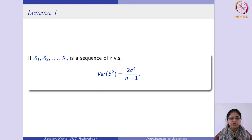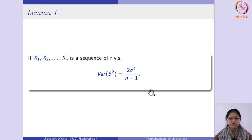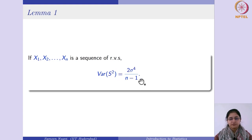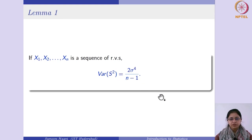The first lemma says that if you have a sequence of random variables, then the variance of the sample variance — S square is your sample variance — would be twice sigma raised to the power 4 divided by n minus 1. Let us see how we can prove this.